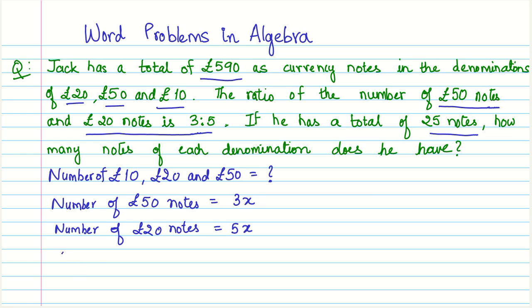We know that total notes equals 25. So we got information on £50 notes, we got information on £20 notes, and we know the total notes, but we do not know the number of £10 notes. So essentially I'm trying to write down the bits and pieces of information that we have available.